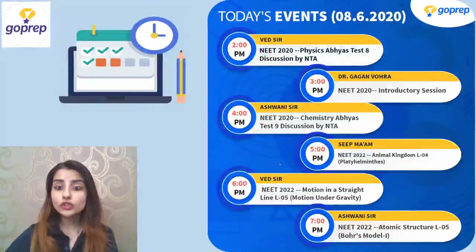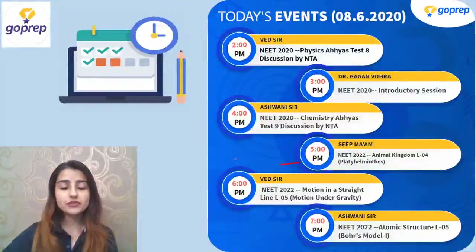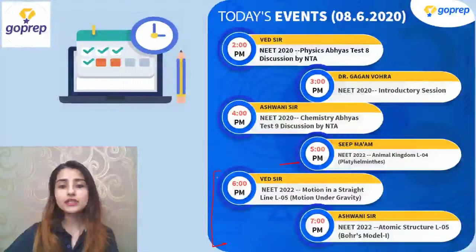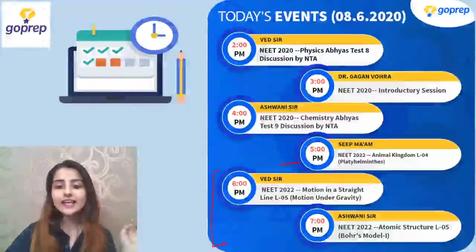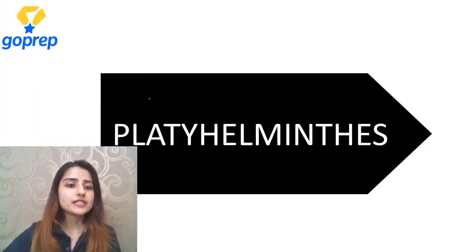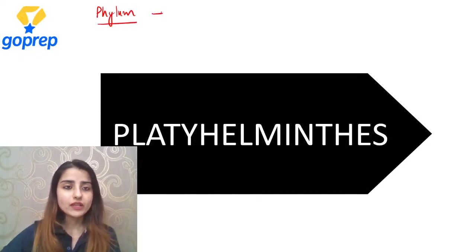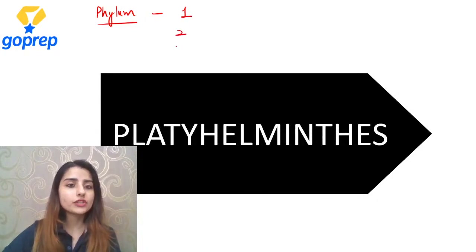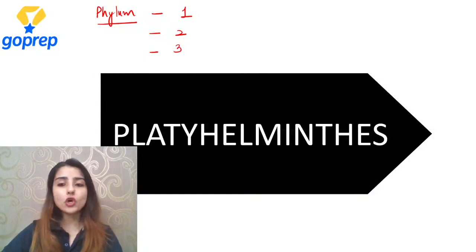You are left with just 6 and 7 pm. At 6 o'clock you are going to learn about motion in a straight line, and next is going to be atomic structure. So we have to start the next phylum. How many phylums have we done? This is just a revision of the previous class. We have discussed phylum number one, phylum number two, phylum number three - and I want names of these phylums from all of you.